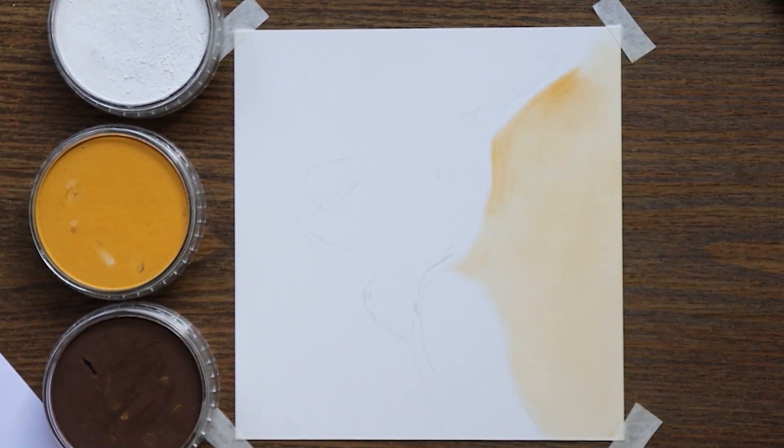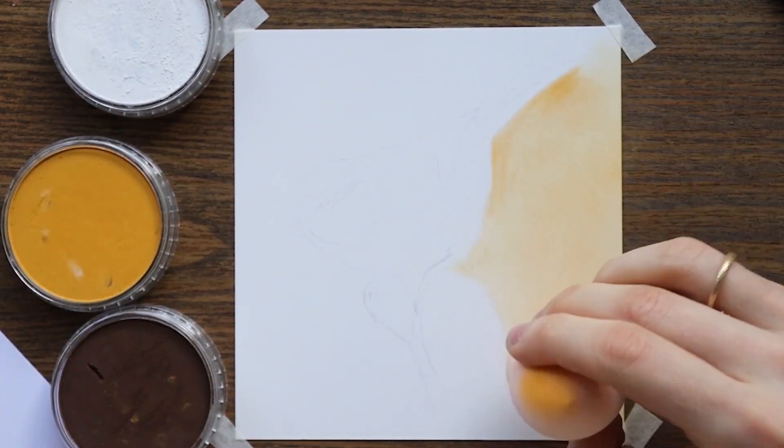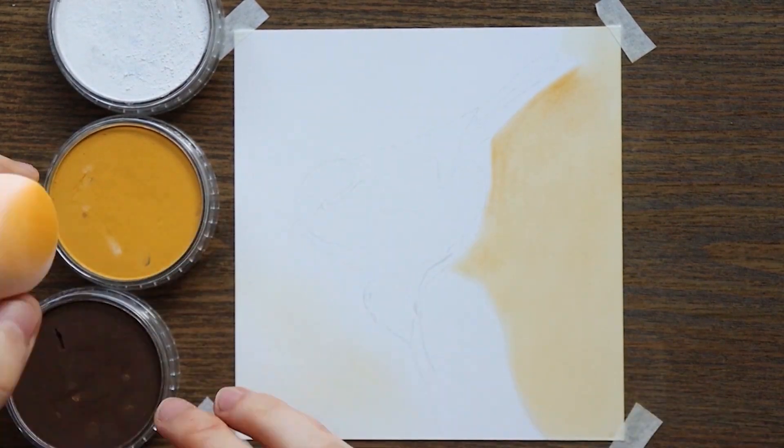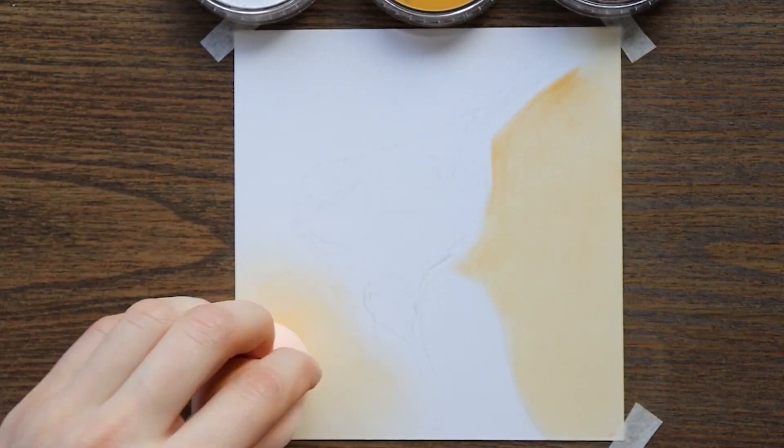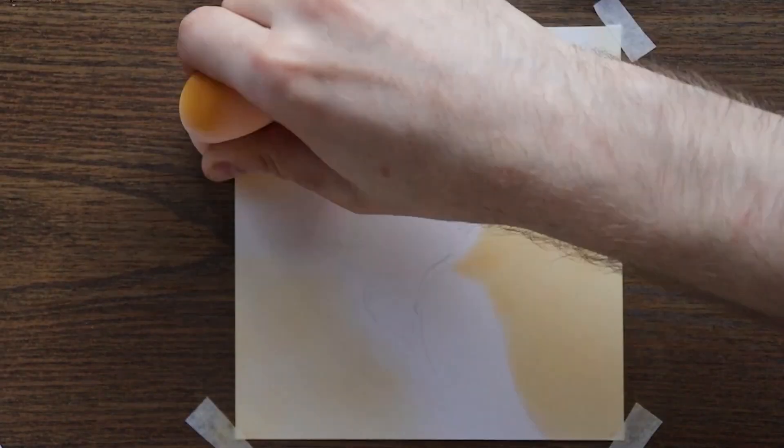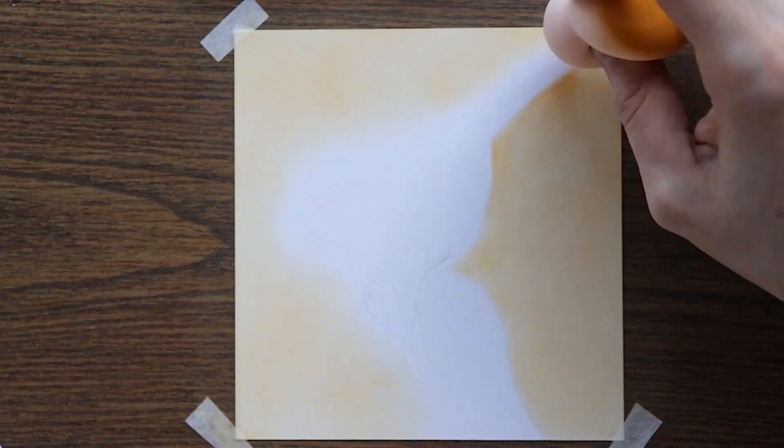I'm always going back to the pastel pad to take more pigment because these beauty blenders tend to absorb a lot of the pigment and it is necessary to always add more. I am being very careful with the pressure on the sponge when I'm applying these layers because if I press too hard it is possible I'm going to create an unwanted spot which can be very hard to erase or cover.